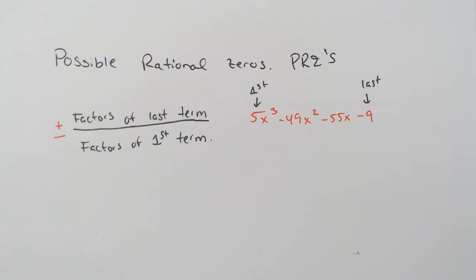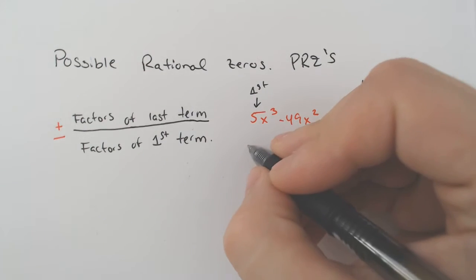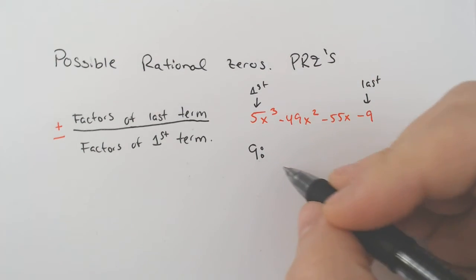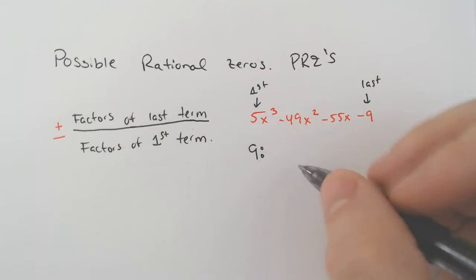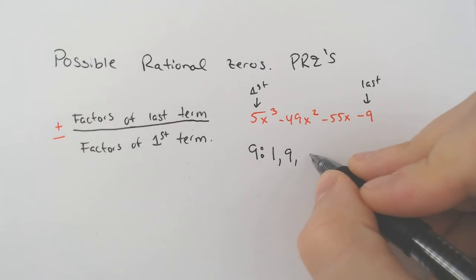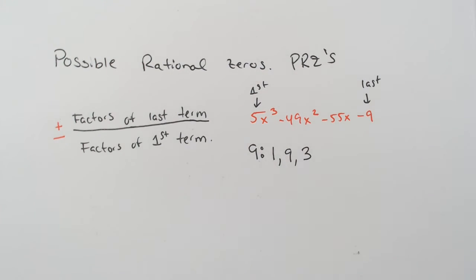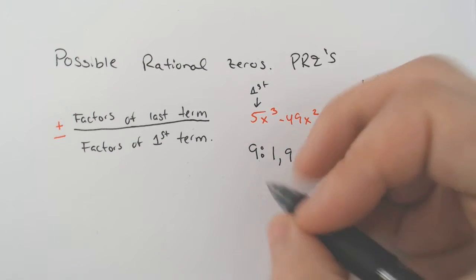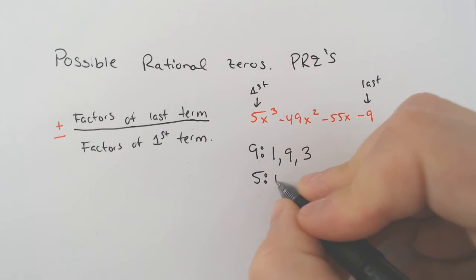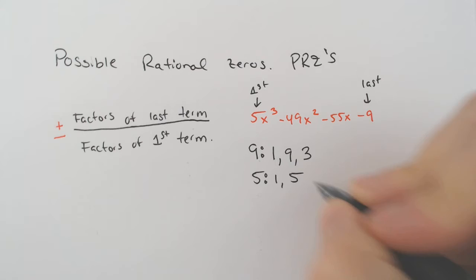You look at them and determine what are the factors of 9. The things that multiply to equal 9, the last term, would be 1 and 9, and then 3 — you don't need to write 3 twice. And then the factors of the first term are just 1 and 5.